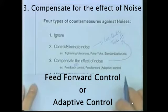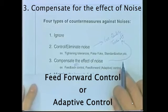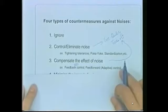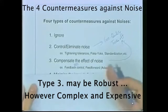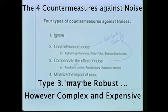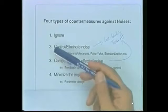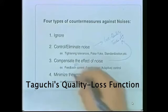Feed-forward control and adaptive control work similarly — they add complexity to the existing system to compensate for the system's inability to be robust as currently designed. This makes it robust, but it adds complexity and cost. However, if certain noise is so dominating, we have to apply this kind of countermeasure. Usually, we use the loss function to make decisions whether to apply these two types of countermeasures.